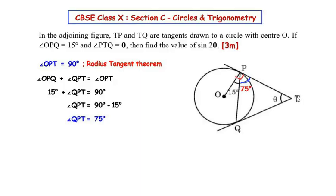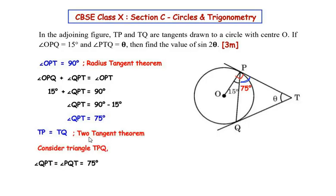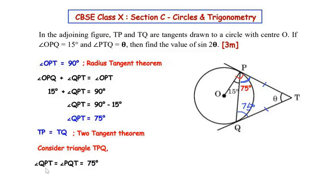Now let us focus on the tangents drawn from external point T, that is TP and TQ. According to the two-tangent theorem, the lengths of tangents drawn to a circle from the same external point are equal, so TP equals TQ. Considering triangle TPQ, it becomes an isosceles triangle because two sides are equal, so their corresponding angles are also equal. Therefore angle PQT also becomes 75 degrees.